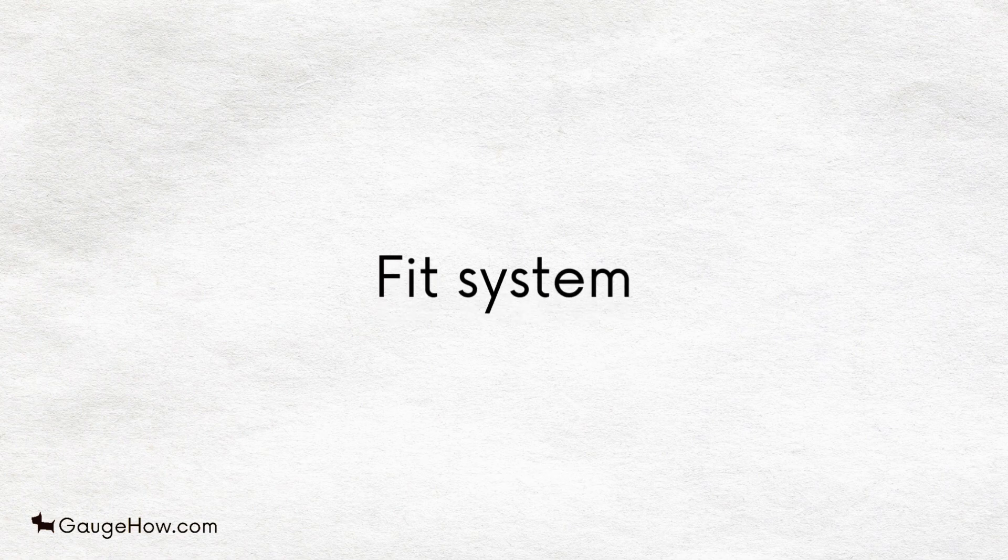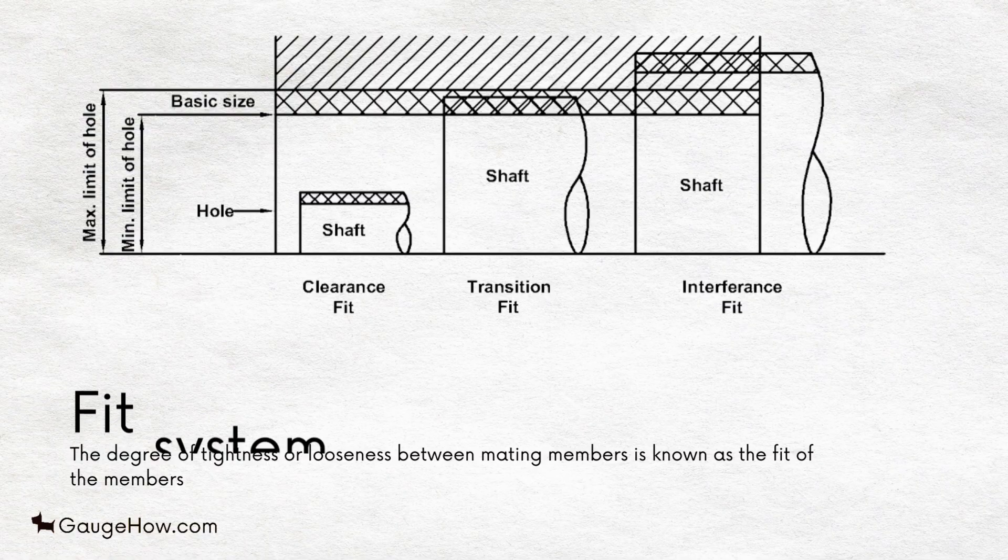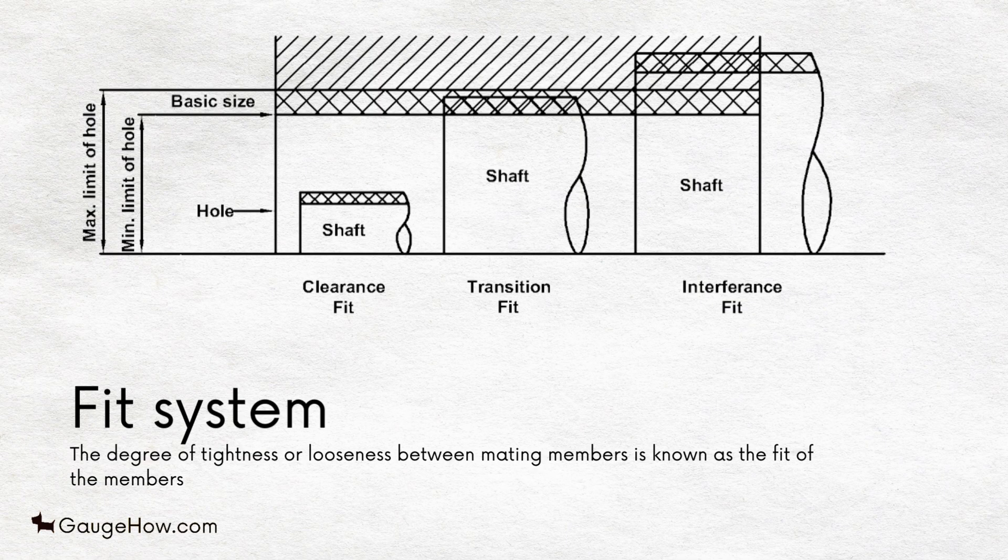The degree of tightness or looseness between the mating members is known as the fit of the members. It depends on the actual value of the individual tolerances of the mating components. The fits can be broadly classified into three categories.